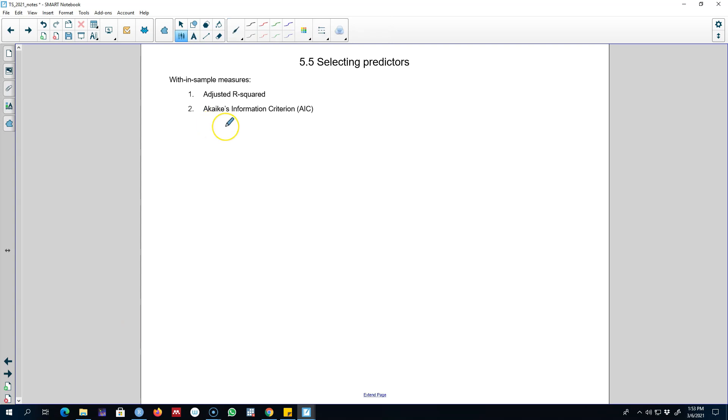Hello and welcome to another video on time series forecasting. In this video, I'm going to talk about how to select the best predictors in a regression model using AIC, or Akaike's Information Criterion.